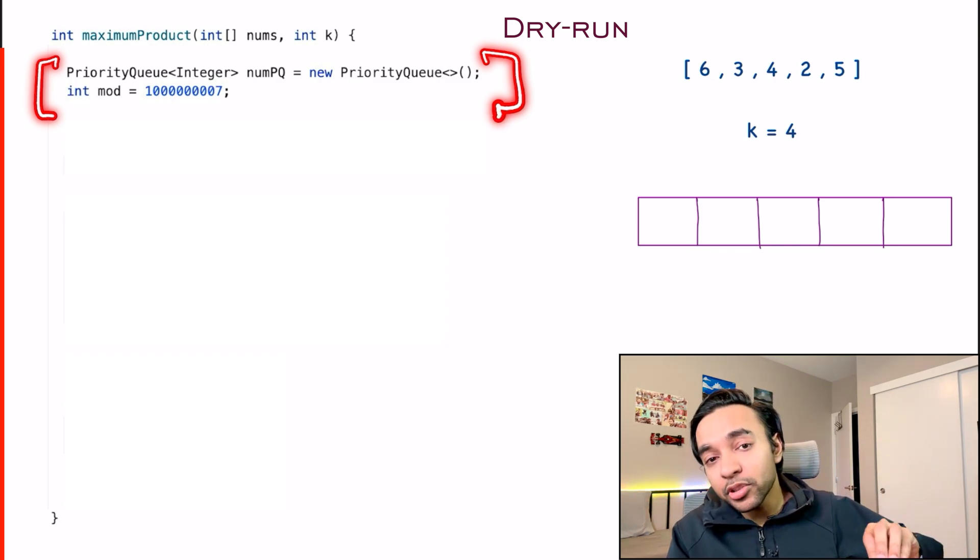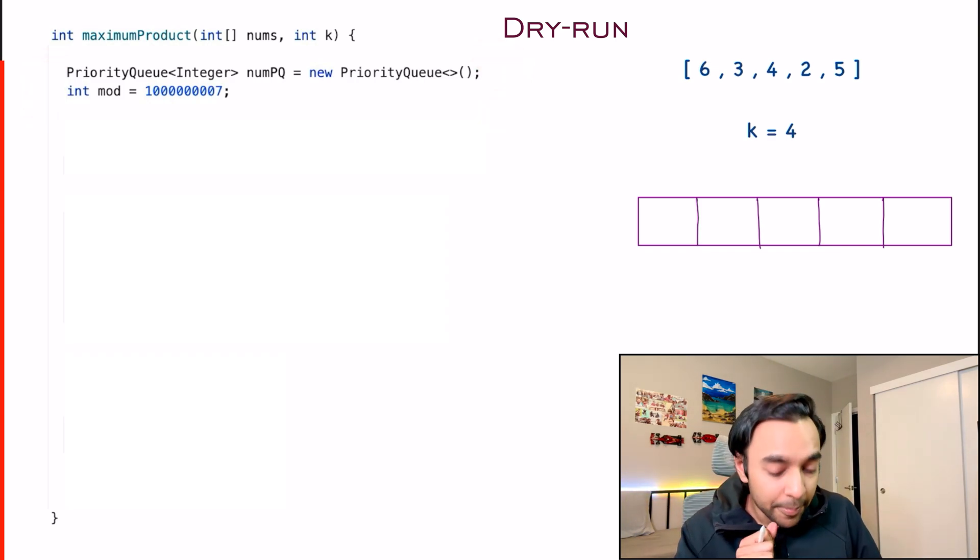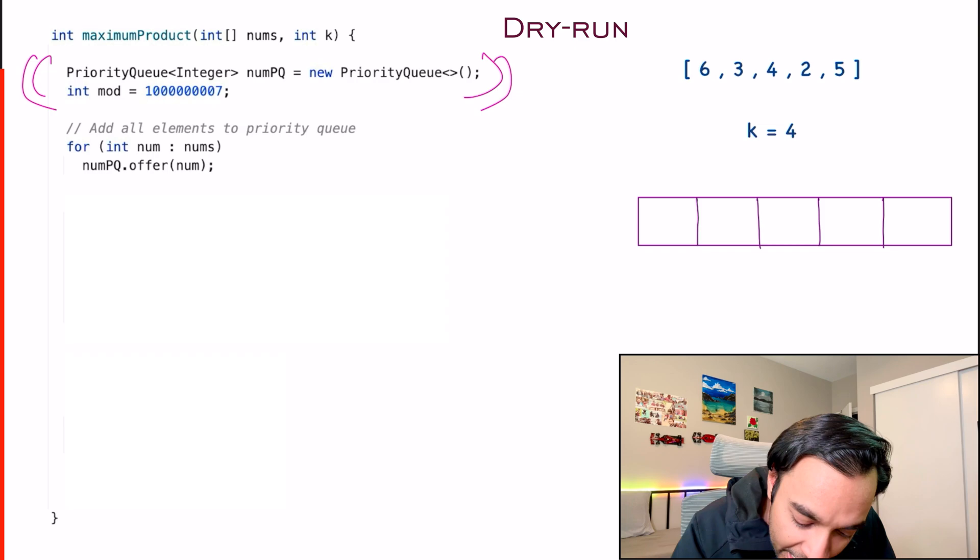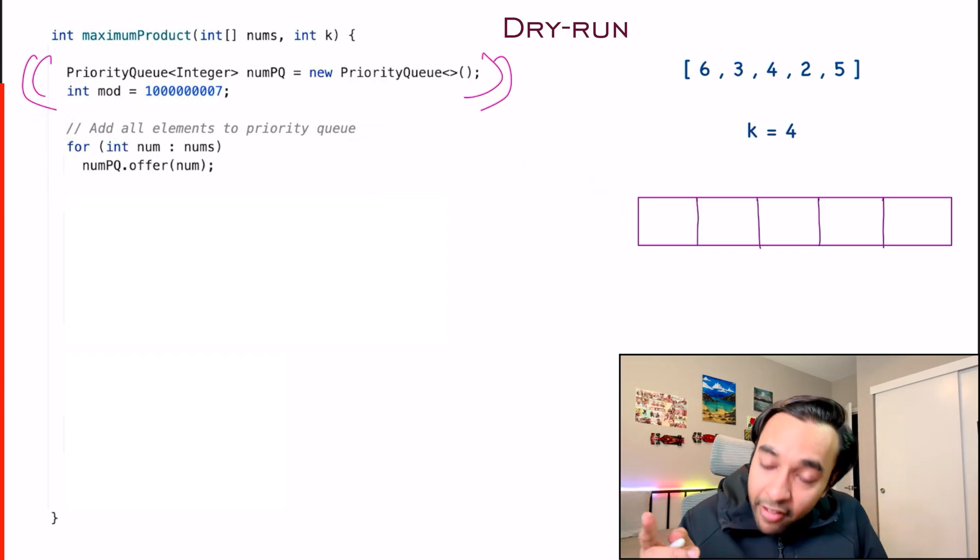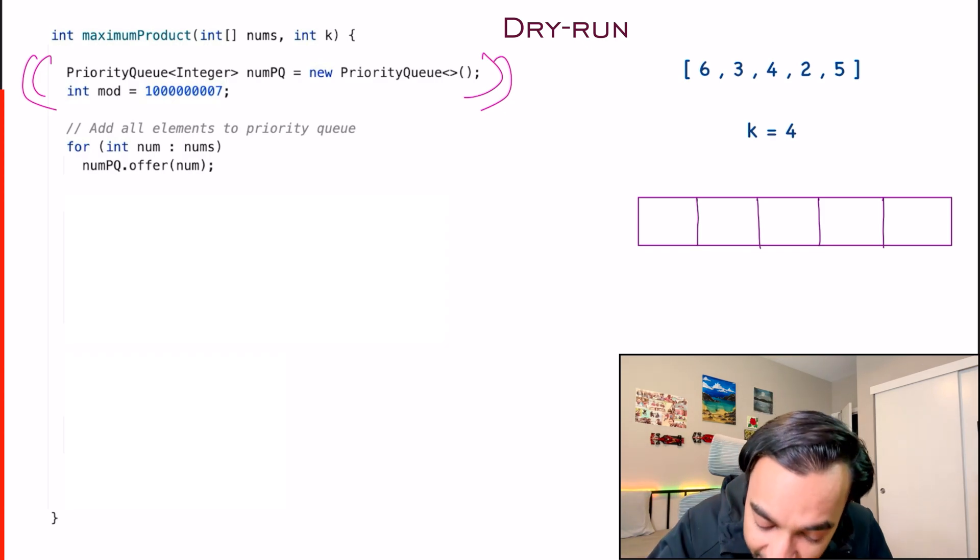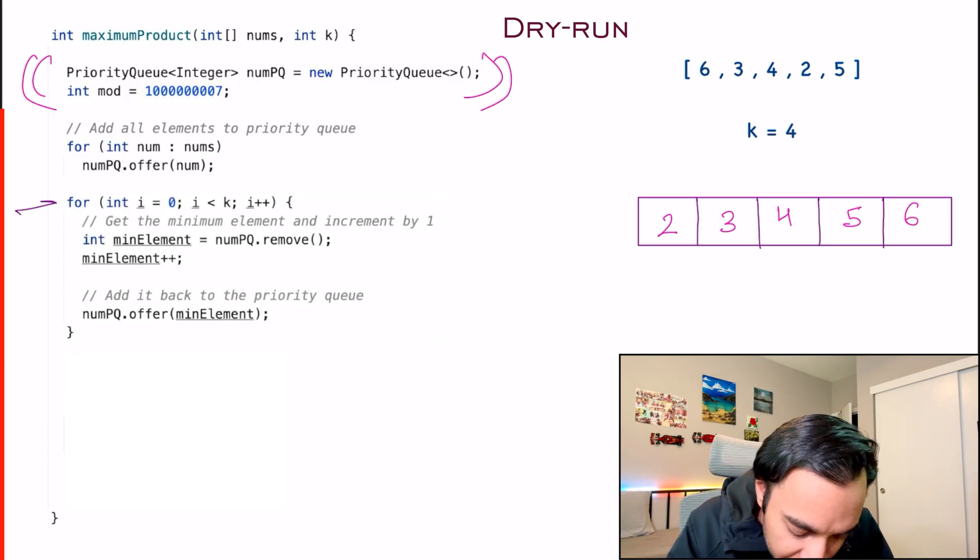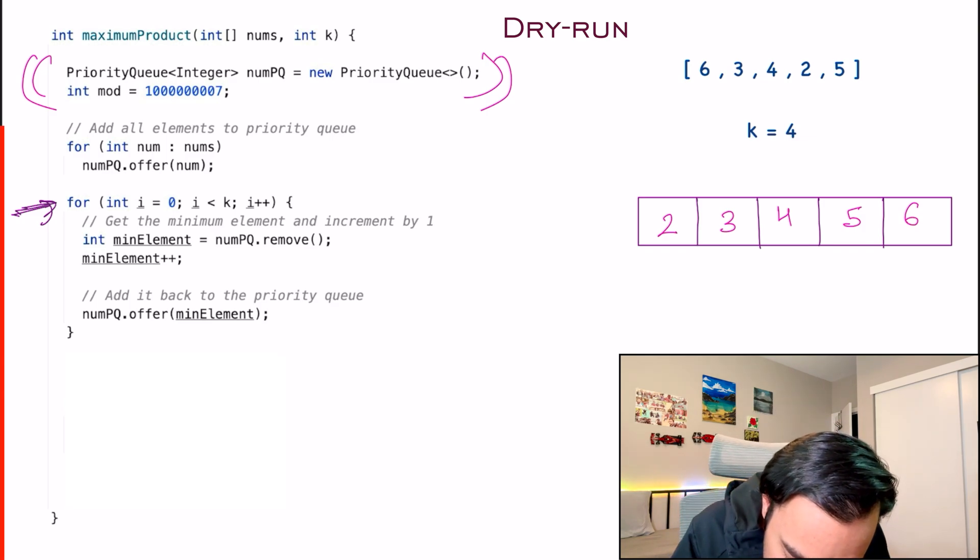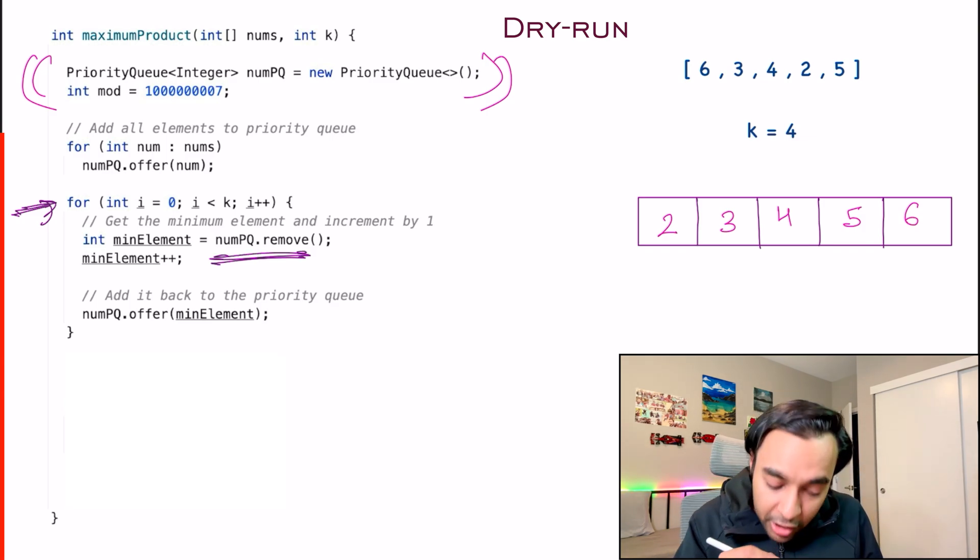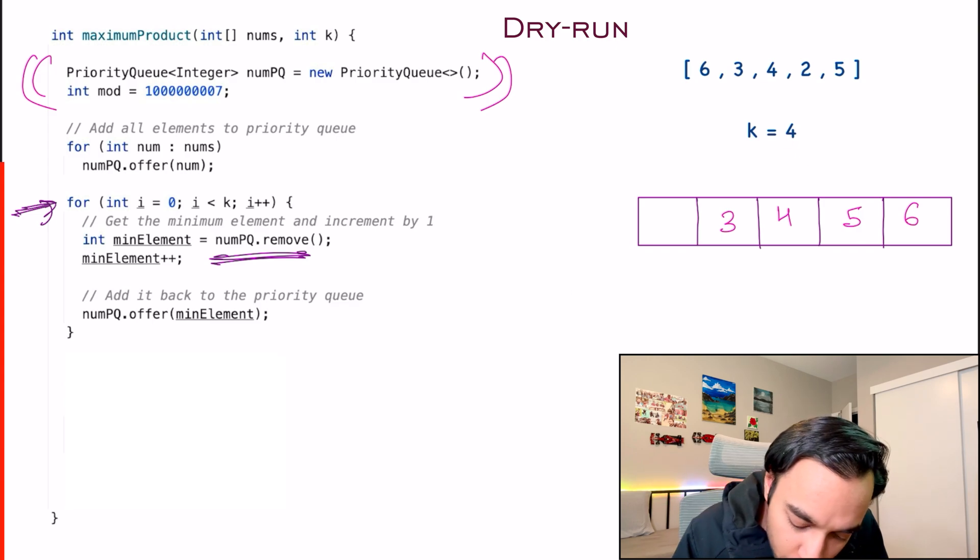So the first step that we do is we create a priority queue. And the property of a priority queue is that anytime I will try to pop out an element, I will get the smallest element. So I have my priority queue ready over here. And in the next step, I add all of my elements of this array to my priority queue. When these elements will get added, they get added in a ascending order. After this, what do you need to do? You need to perform k operations, right? And for every operation, what do you have to do? You get the minimum element from your priority queue. So this will pop out 2. And what do you do with this 2? You do a minimum element plus plus. So this 2 now changes to 3. And what do you do next? You add this element back to your priority queue.